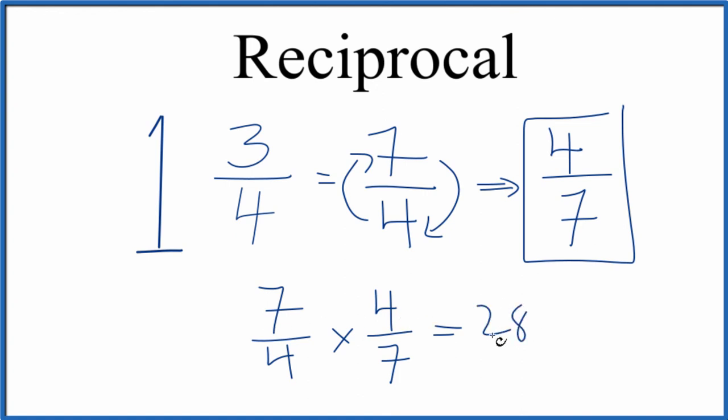Seven times four is 28. Four times seven, that's 28. And 28 divided by 28, that is one. So this is the correct reciprocal for one and three-fourths.